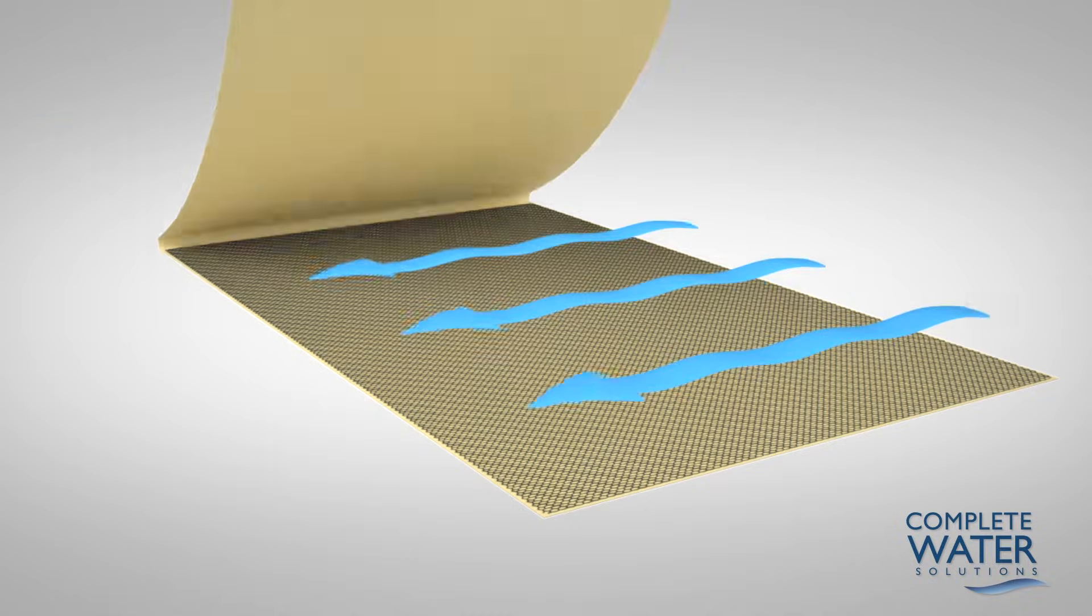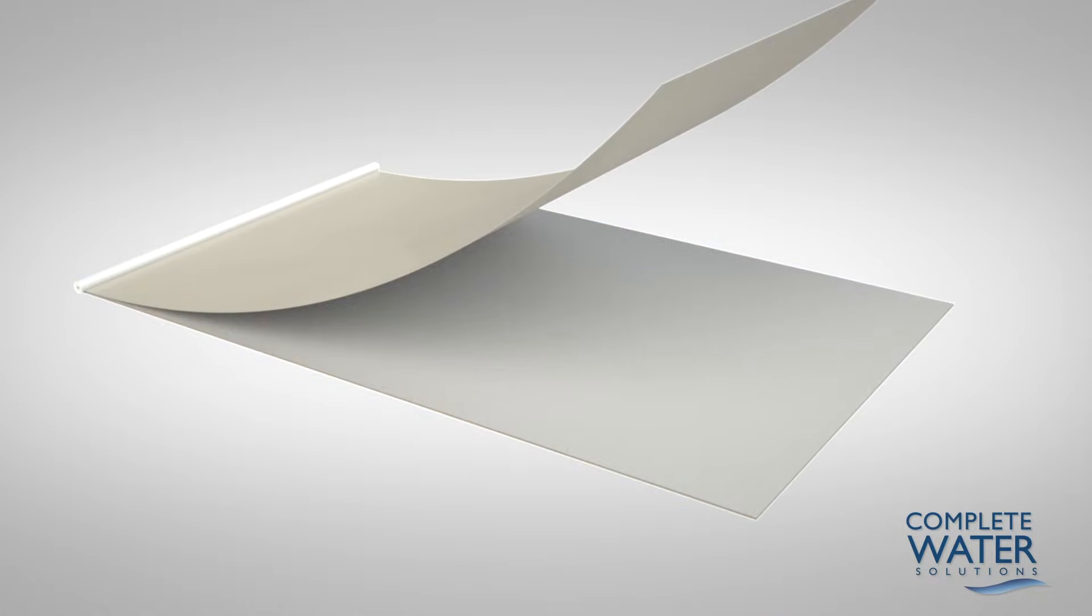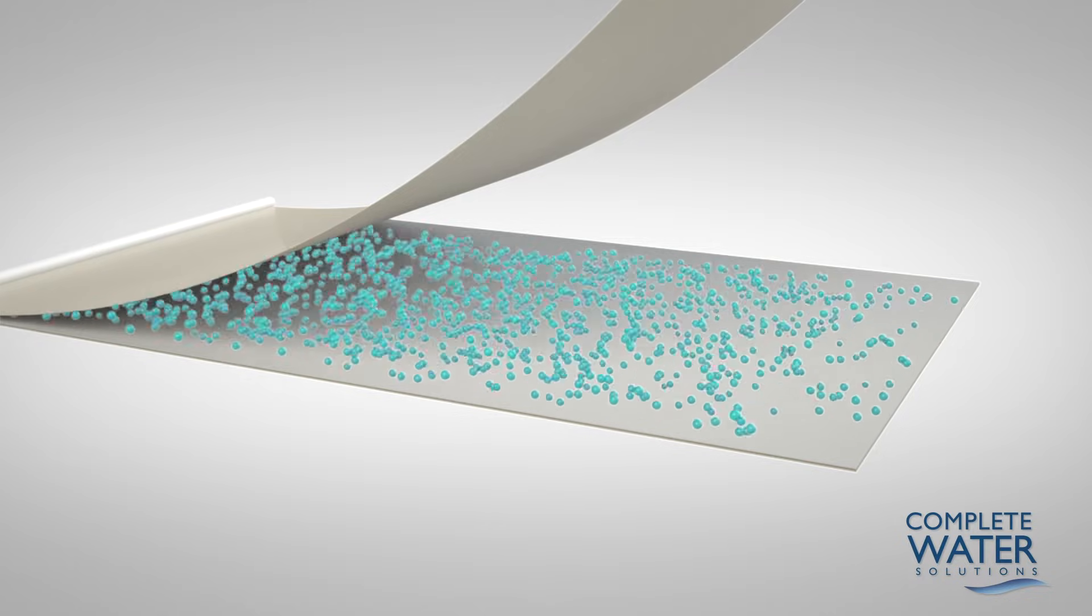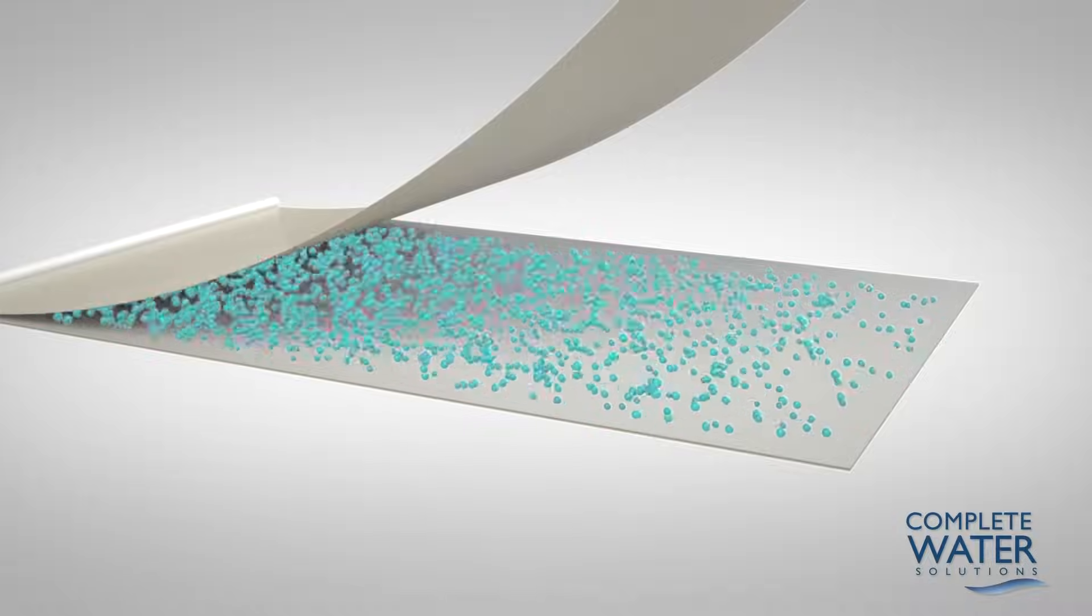This provides turbulence and creates space between the membrane sheets for the feed water. A sheet of permeate spacer is added to the membrane sheets and feed channel spacer. This enables the water product or permeate to flow evenly across the entire membrane surface even under high pressure.